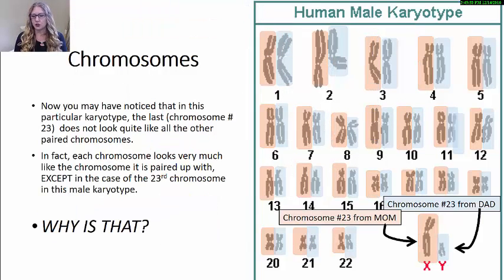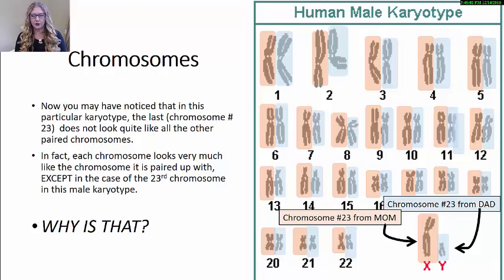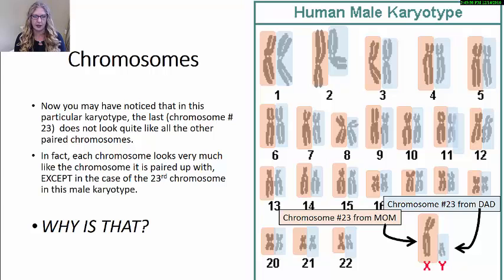Now let's take a closer look at chromosome number 23. In this particular karyotype, which is a male karyotype, we see that the number 23 chromosomes look different from one another — unlike all the other chromosomes, which look similar as they are paired up. Let's look at why that is.